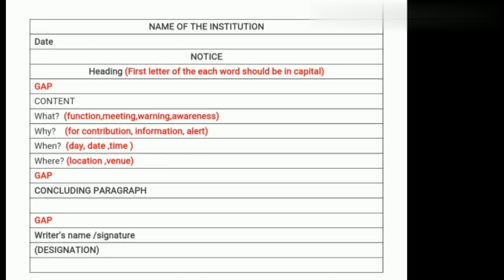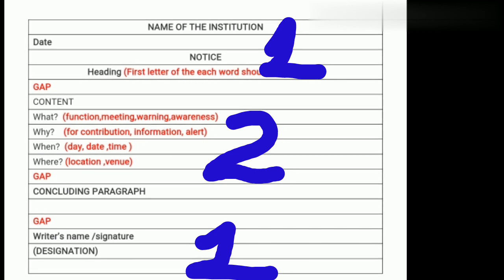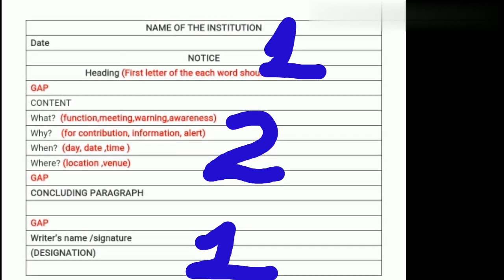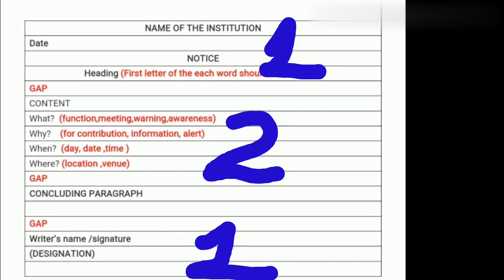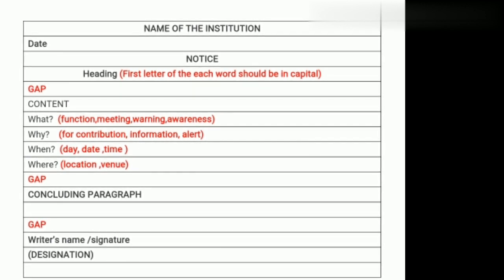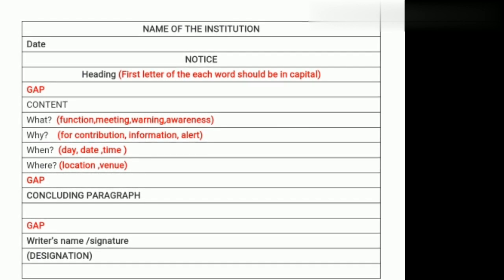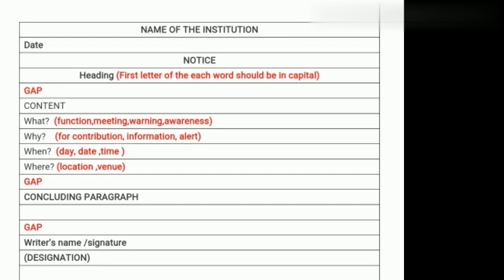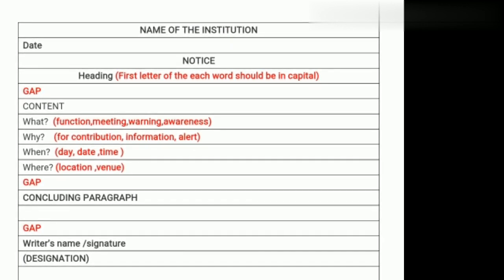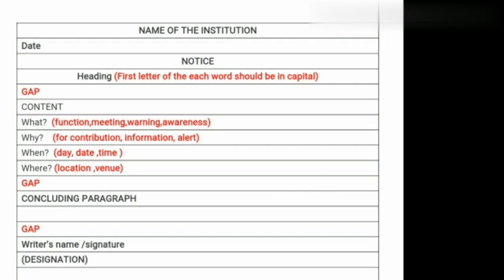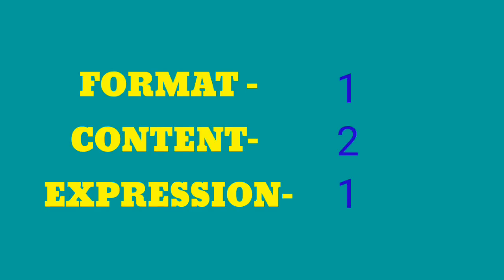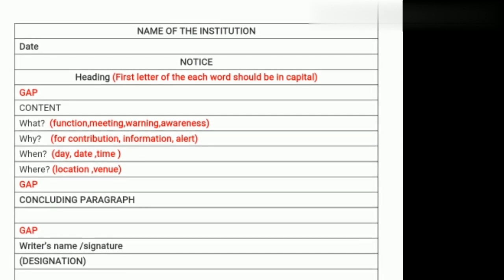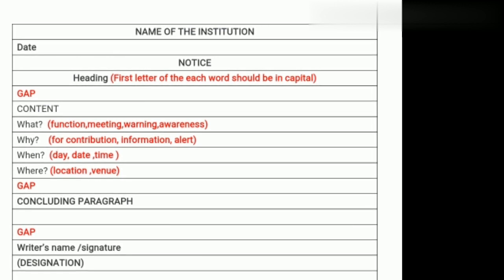I hope it's clear. Now I will move to the marking section. One mark is for format, and format includes name of the institution, date, notice, heading, first content paragraph, concluding paragraph, and then the signatory section. If you miss out even one, you are not going to get the full one mark. In the content section, your notice should contain the answer of what, why, when, and where. One mark is for expression — whether your message is clear or not, whether the notice is able to reach common people. Notice is for common people, and among them we find all kinds of public — educated, uneducated, less educated. Therefore, we have to make our notice as simple and specific as possible.